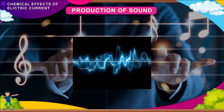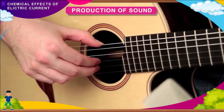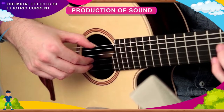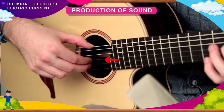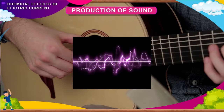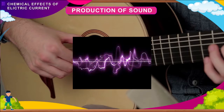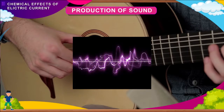Waves are produced when a string of a guitar is plucked. As a result, the string starts moving back and forth and sound is produced as a result of vibrations. The back and forth, or to and fro, motion in a body is termed as vibration or oscillation.